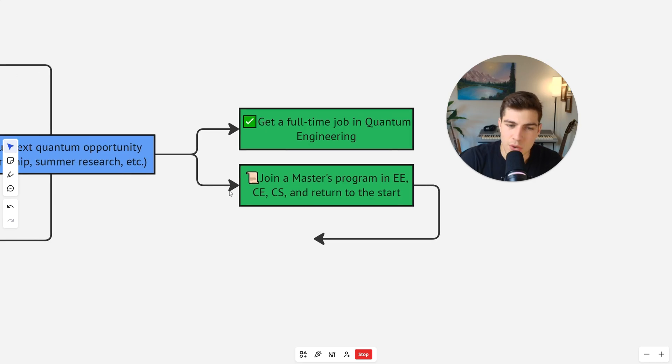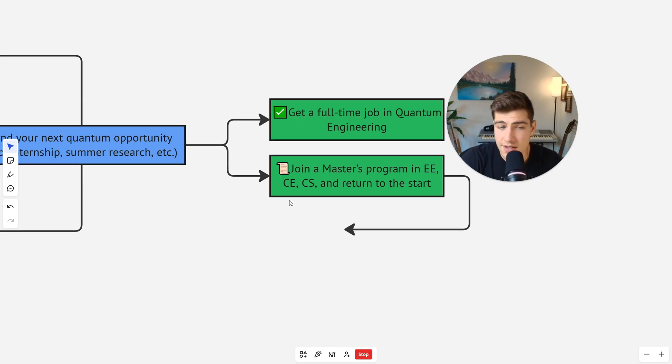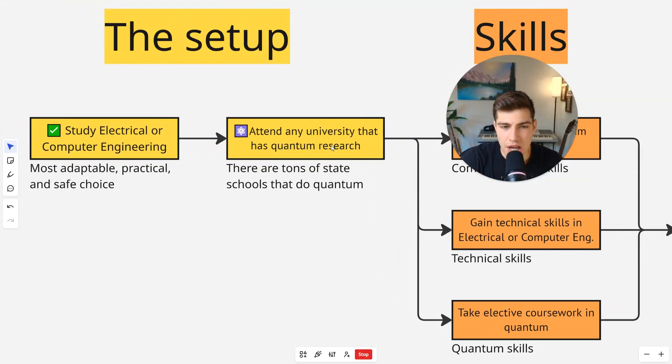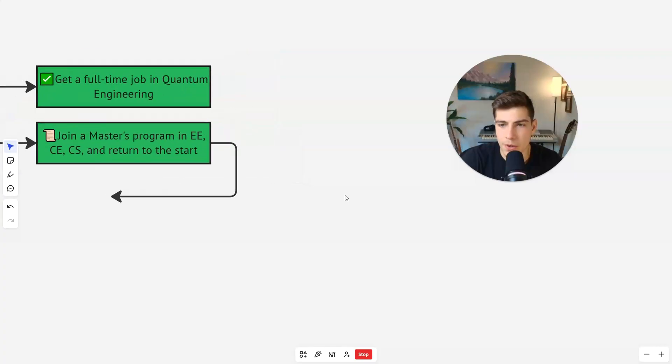But if you don't find success, what you can always do, and you might find that you actually want to do this to do more advanced things, is you just join a master's program in electrical engineering, computer engineering, computer science, and then return to the start. So make sure your master's degree is at a university that has quantum research, and then you just go through this thing again.